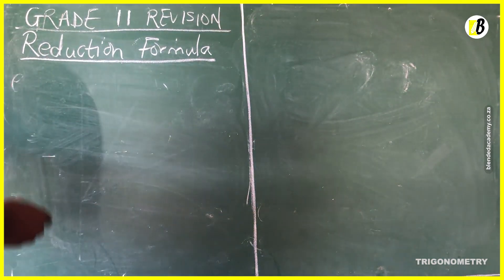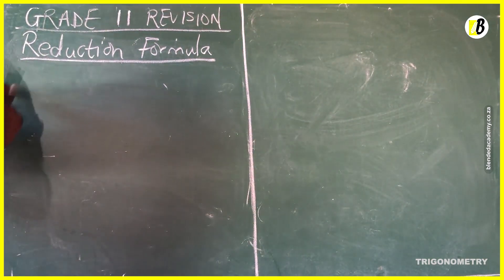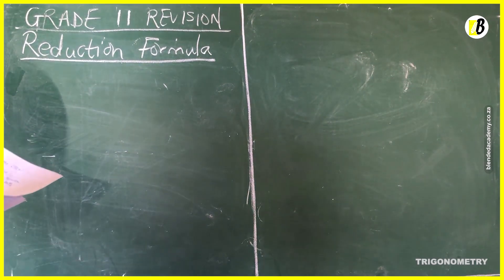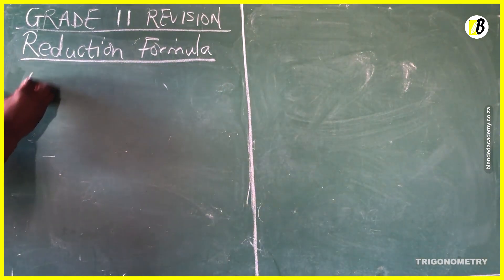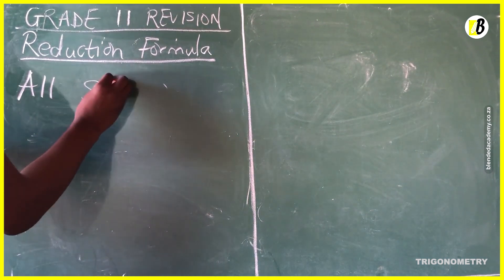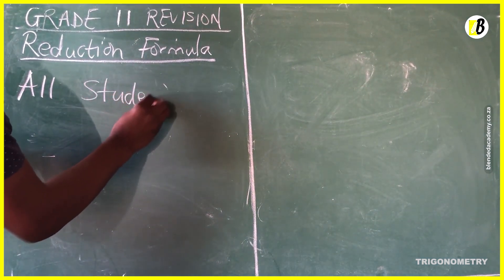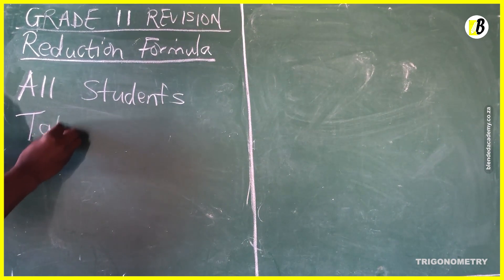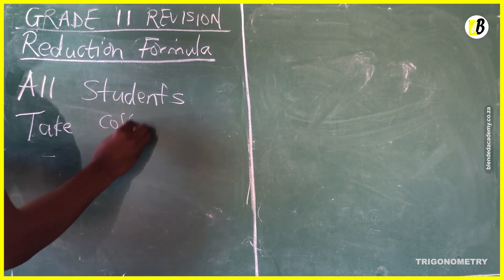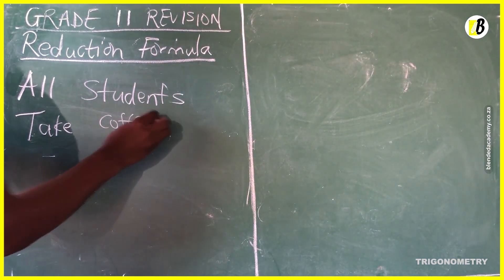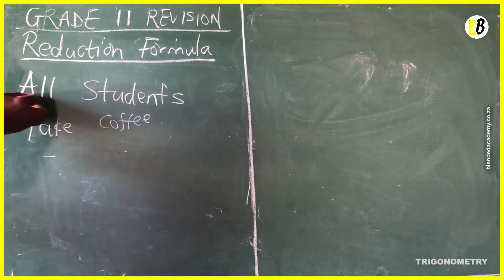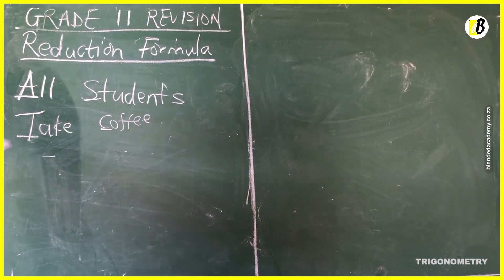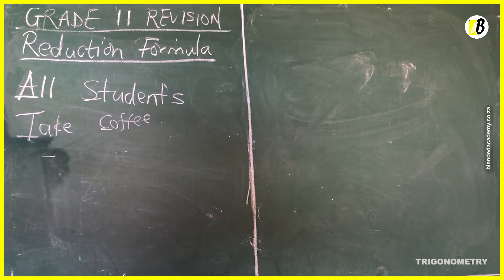There's a phrase that you need to know. This phrase is gonna help you remember which functions are positive in which quadrant. The phrase is: All Students Take Coffee. You need to remember this phrase in order to successfully solve trigonometric expressions.